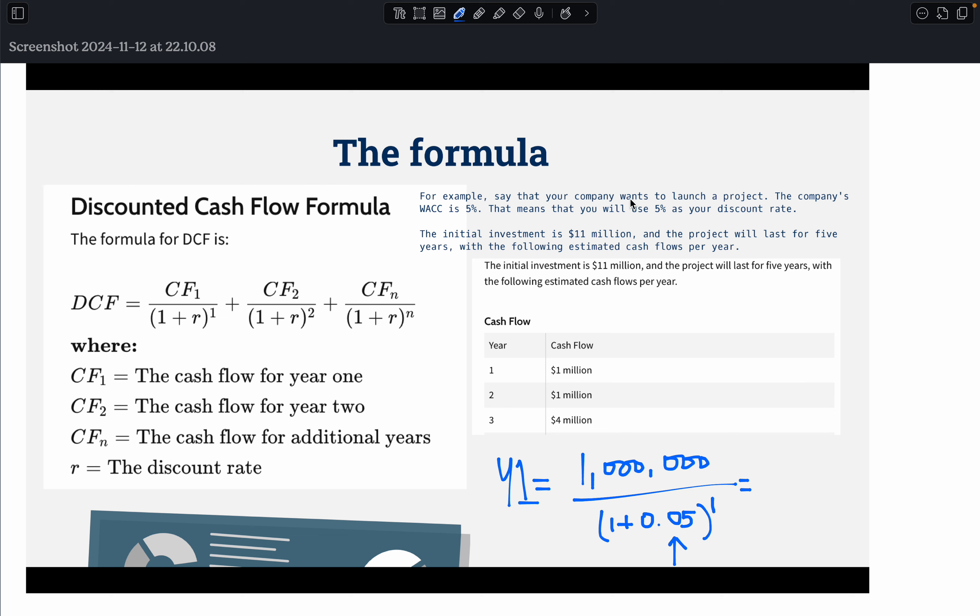Say that your company wants to launch a project. The company's weighted average cost of capital is 5%. That means that you will use 5% as your discount rate. The initial investment is £11 million and the project will last for five years with the following estimated cash flows per year. So again, with investment appraisal, when we do the chapter investment appraisal in A-level business at Excel...